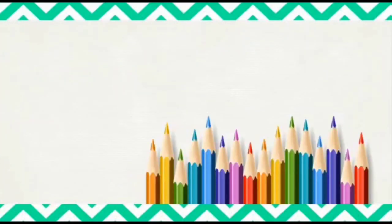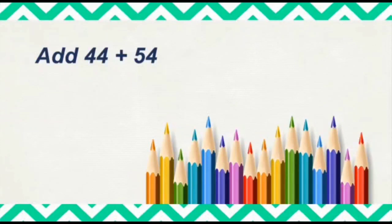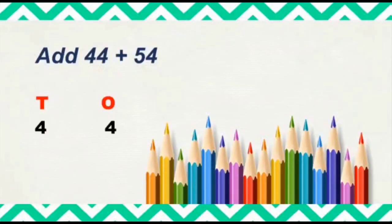Look at another example. Add 44 plus 54. Let's write 10s and 1s and arrange the numbers according to their place values. So we will write 4 under the 10s column and 4 under the 1s column. Next, 54 — 5 tens and 4 ones — so 5 under the 10s column and 4 under the 1s column.